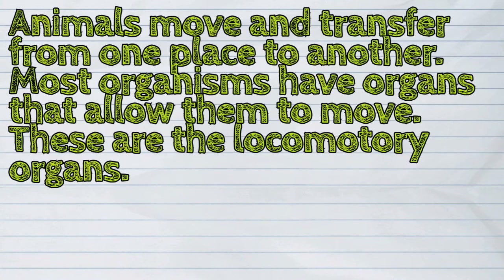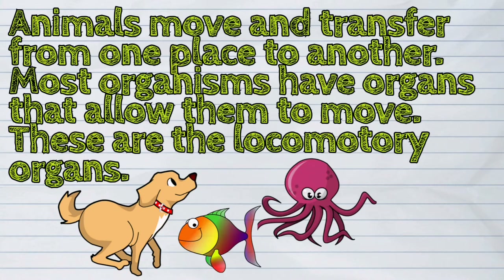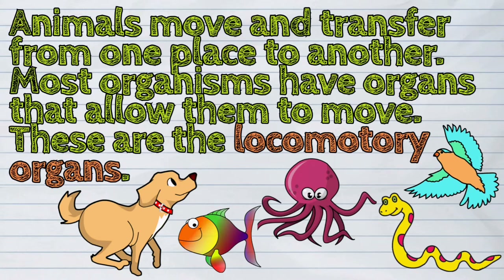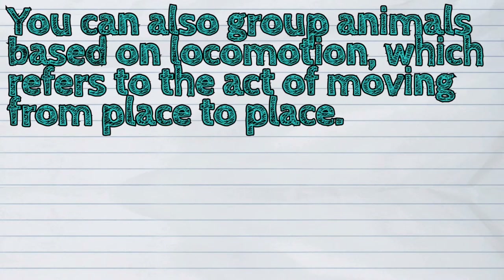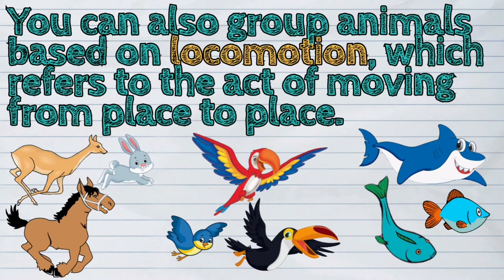Animals move and transfer from one place to another. Most organisms have organs that allow them to move. These are the locomotory organs. You can also group animals based on locomotion, which refers to the act of moving from place to place.